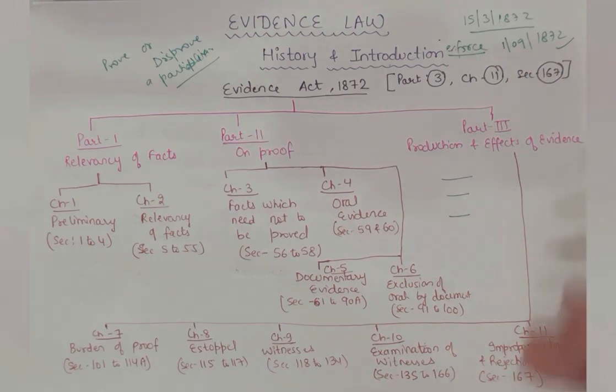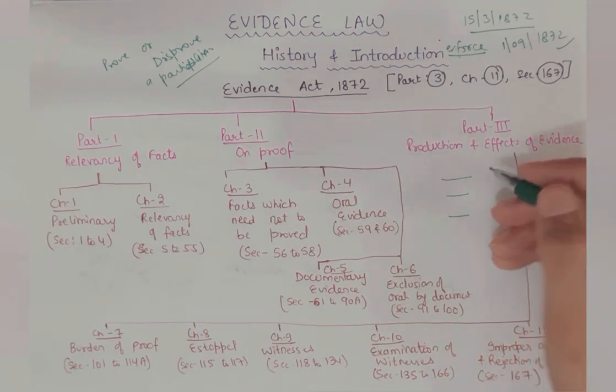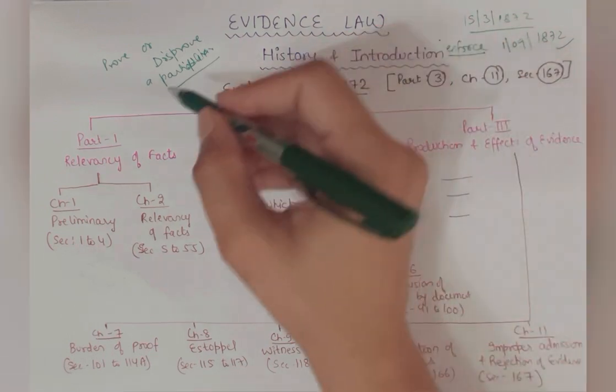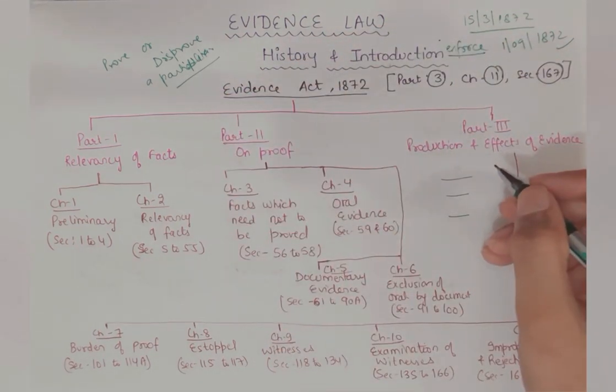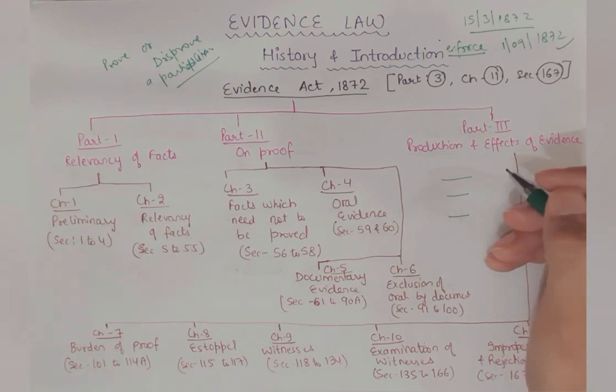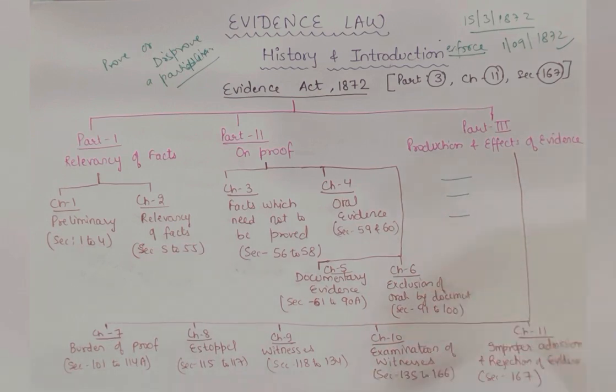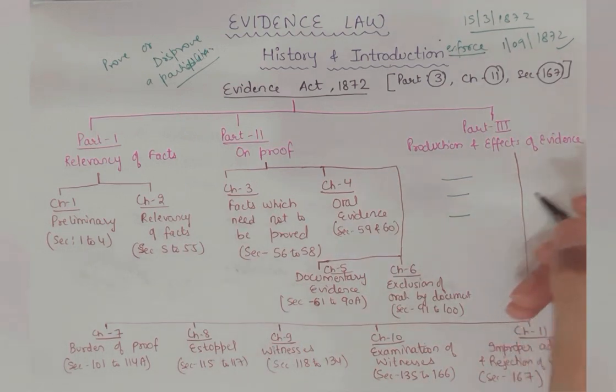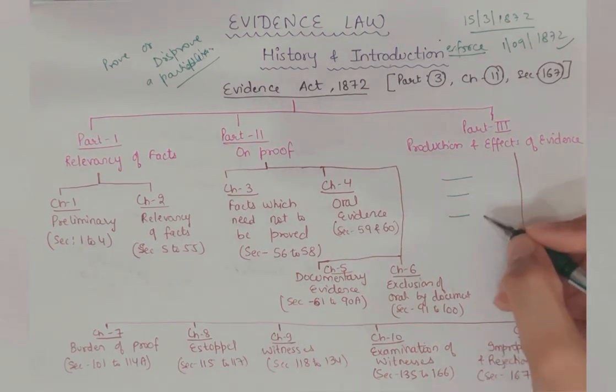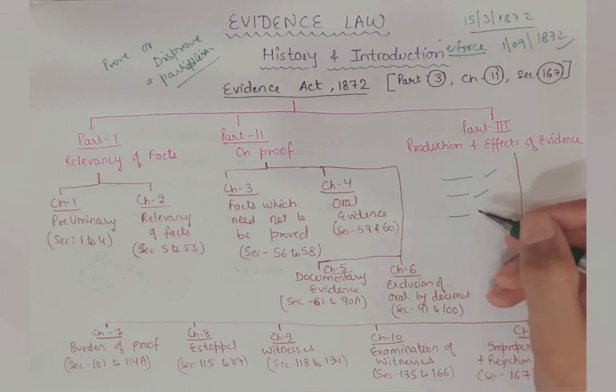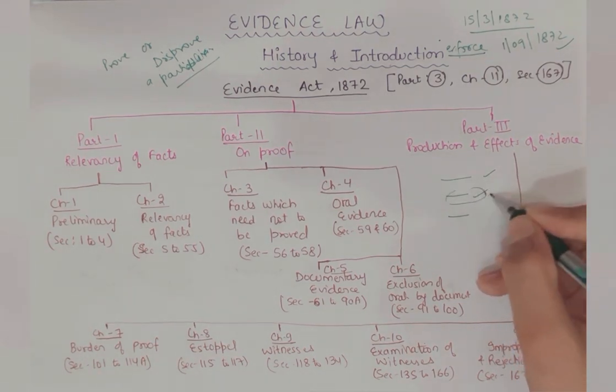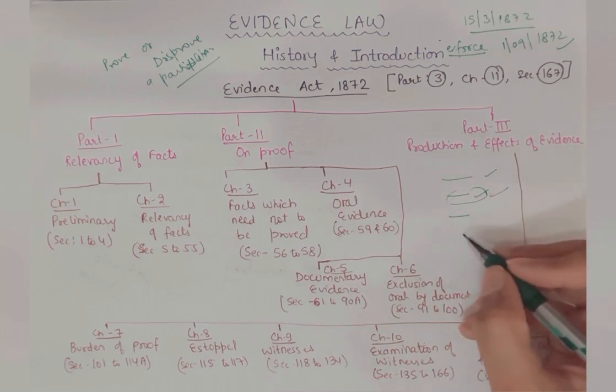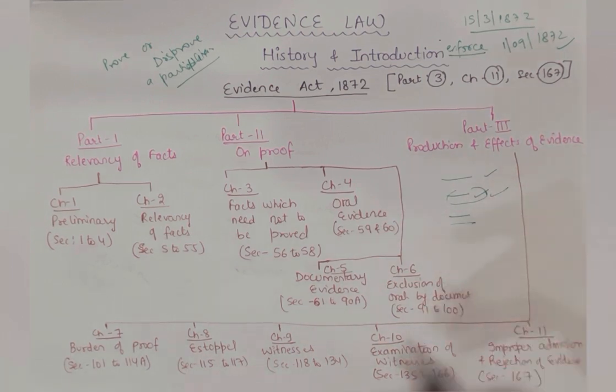The first period was according to Hindu law. In Hindu law, evidences are of two types: divine, meaning ultimate or from God, and human evidences like witnesses or documents made by humans. Then according to Muslim law, we see evidences according to their particular law sections. And third is the British period.